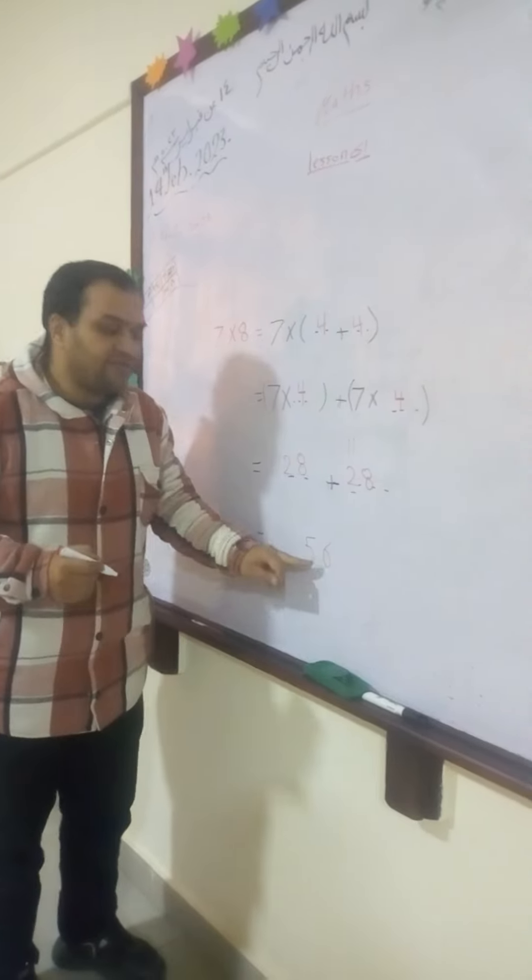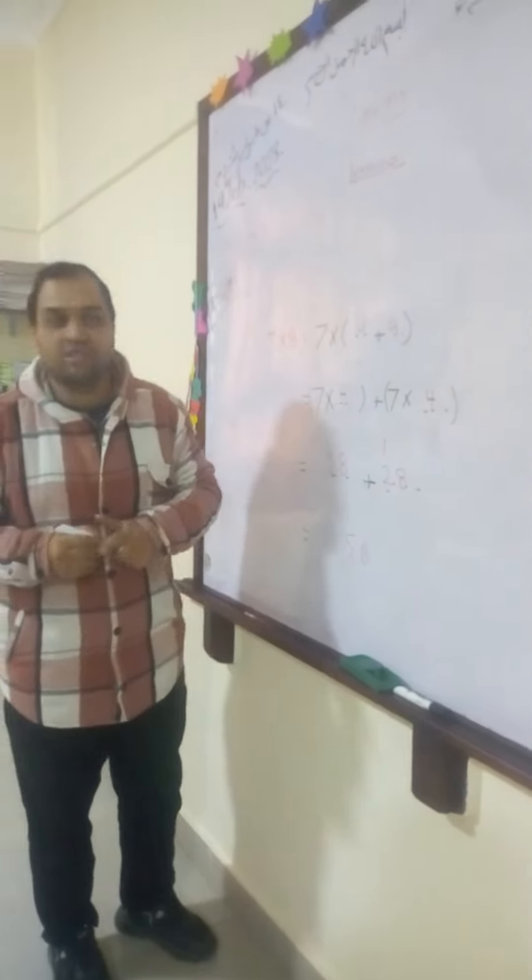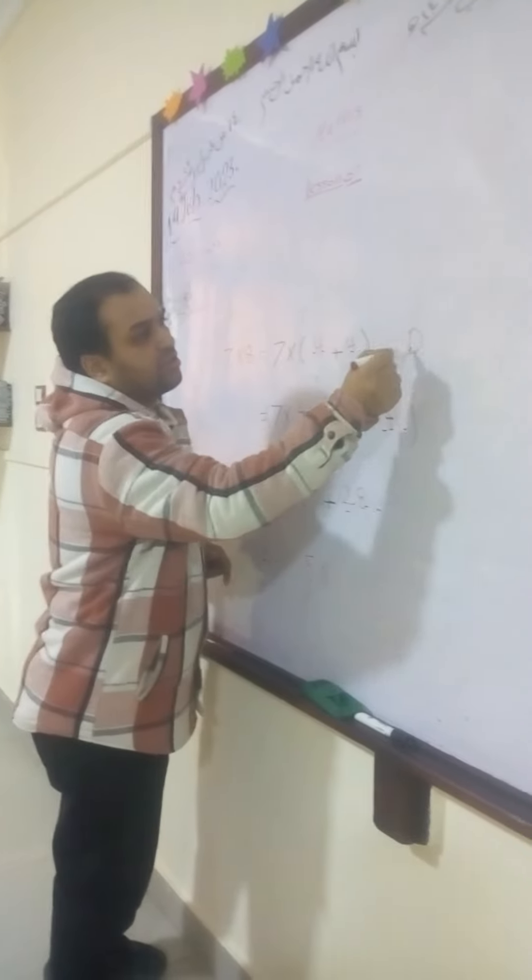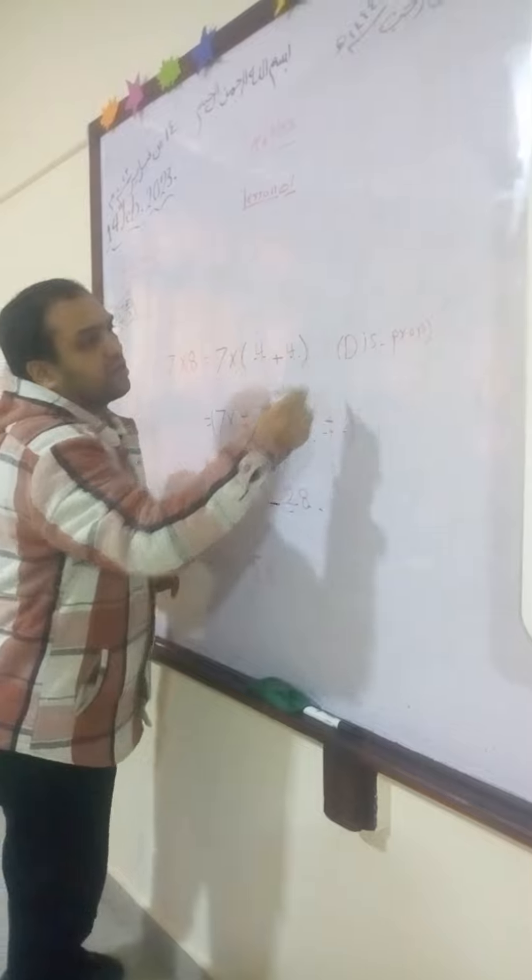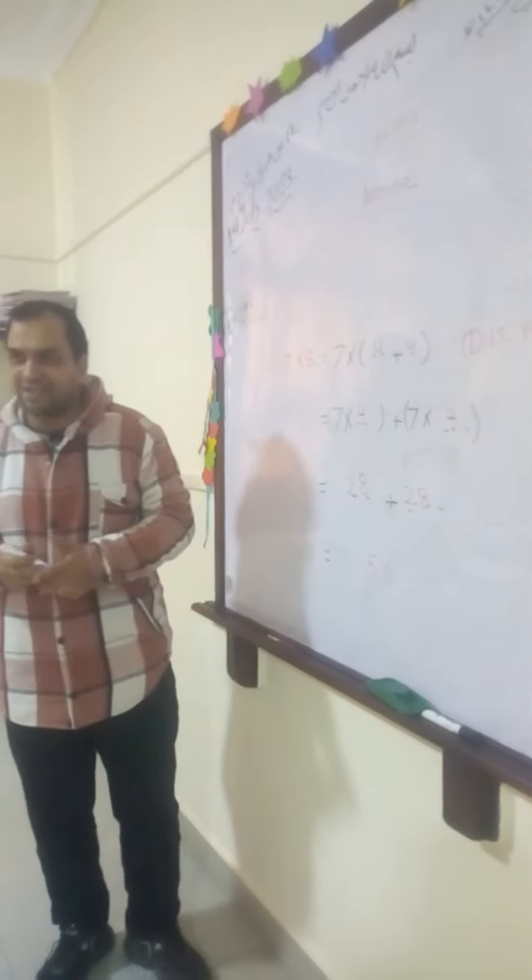So, 7 times 8 equals 56. We use here distributive properties. We call it distributive properties. Understood? Okay, thank you.